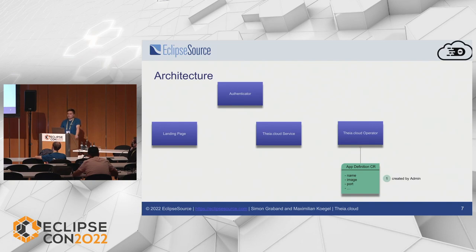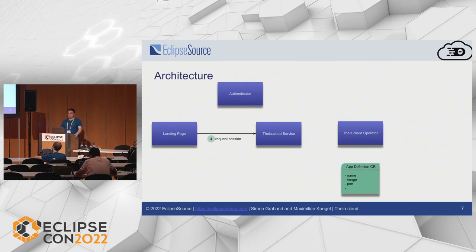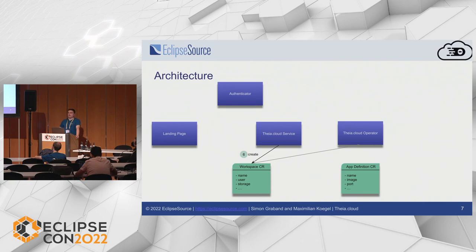The app definition custom resource provides three main attributes: a name for the app, a container image for the application we want to run, and additional configuration like ports to be exposed. With that, the cluster now knows which apps it can provide pods for. When a user connects to the landing page, they are forwarded to the authenticator; upon successful authentication, the authenticator returns a token, and the landing page uses that token to request a new session from the Thea.cloud service.